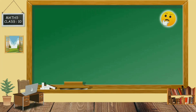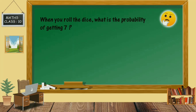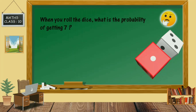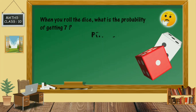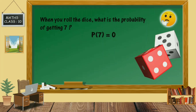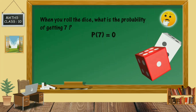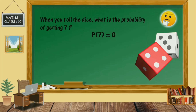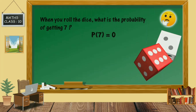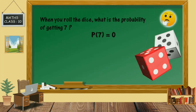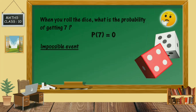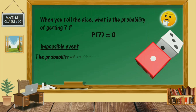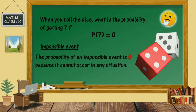Now we will discuss some important points of probability. Suppose when you roll the dice, what is the probability of getting 7? P of 7 equals 0, because it's not possible to get a 7. A dice has only numbers from 1 to 6. So probability of getting 7 equals 0. In such a situation, this is called an impossible event, because it is not possible to get the number 7 on a dice.